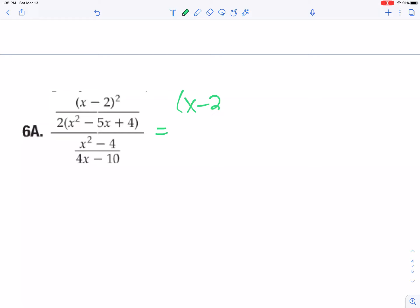x minus 2 squared over 2 parenthesis x squared minus 5x plus 4, end parenthesis – should have made that line a little longer – being divided by x squared minus 4 over 4x minus 10. So now things get a little more interesting.